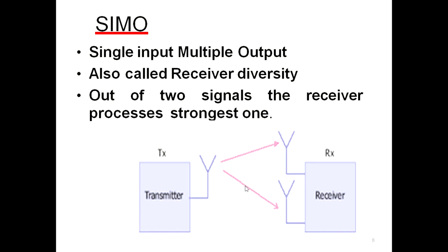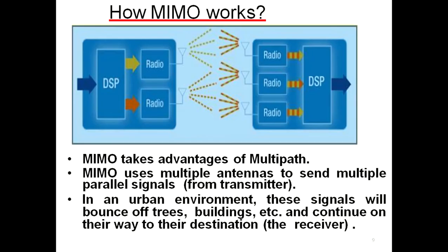In the SIMO diagram, two different paths are shown in red, meaning the receiver gets two versions of the same transmitted signal. It then decides which one has the best quality, and that highest quality signal is taken for processing. That is the meaning of SIMO.